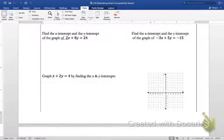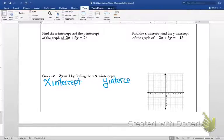In this example, graph x plus 2y equals 4 by finding the x and y intercepts. So this kind of pulls it all together. The first thing that we have to do here is find our x intercept and our y intercept, and then we can graph them.